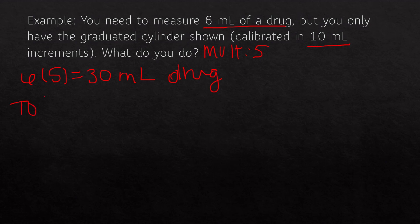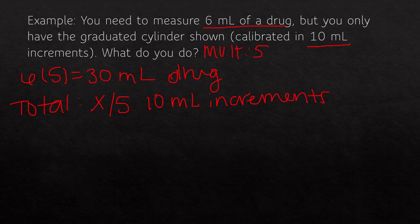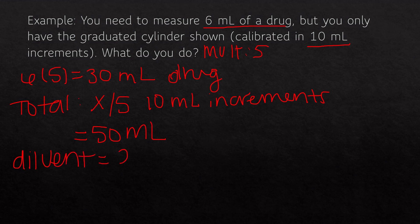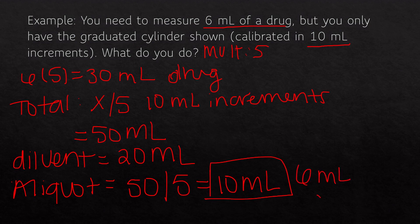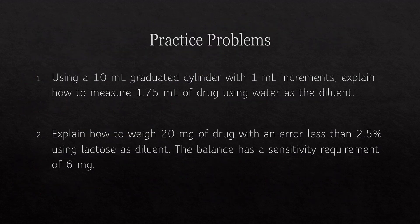Next, find a total that is divisible by the multiple and still in 10-milliliter increments — use a total of 50 milliliters. That makes the diluent 50 minus 30 equals 20 milliliters. The aliquot is the total divided by the multiple: 50 divided by 5 equals 10 milliliters. So in every 10 milliliters of your graduated cylinder there will be exactly 6 milliliters of drug.